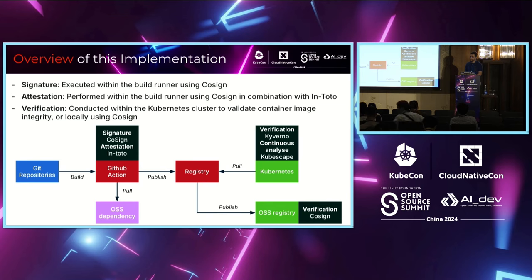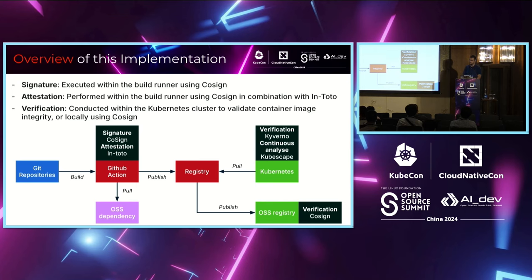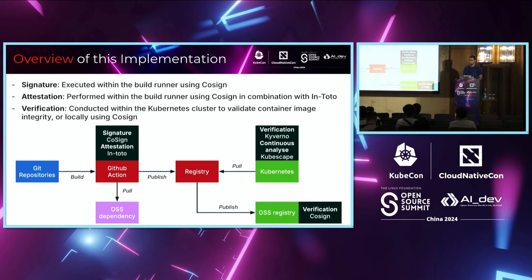Question: In your diagram the defense approach covers the CI/CD part and the runtime part but not the registry itself — do you assume that if images are signed, the registry doesn't need additional controls? Answer: I start by assuming that if the registry is corrupted, I'll detect it at runtime because the provenance won't match the signature. But you can still do additional security at the registry level. At my company we check signatures inside Artifactory — before allowing an artifact to be pushed into the registry, we verify the signature.